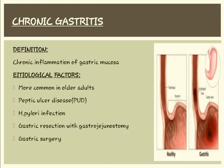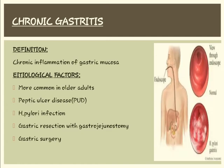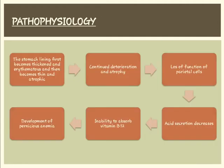Chronic gastritis is the chronic inflammation of the gastric mucosa. Etiological factors include age — it is more common in older adults — peptic ulcer disease, H. pylori infection, gastric resection with gastrojejunostomy, and gastric surgery. The stomach lining first becomes thickened and erythematous, then becomes thin and atrophic. Continued deterioration may lead to loss of parietal cell function, decreased acid secretion, and inability to absorb vitamin B12, causing pernicious anemia.